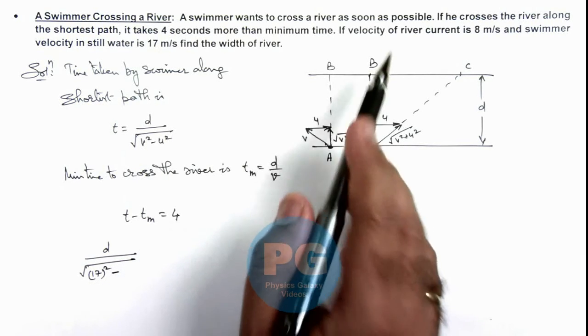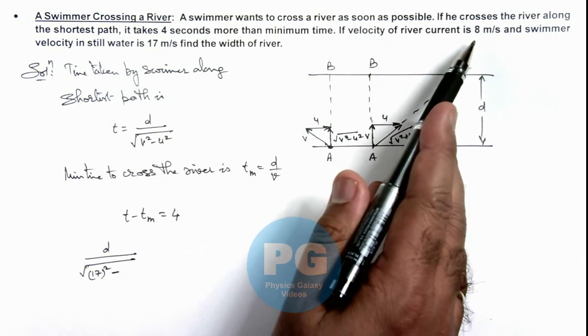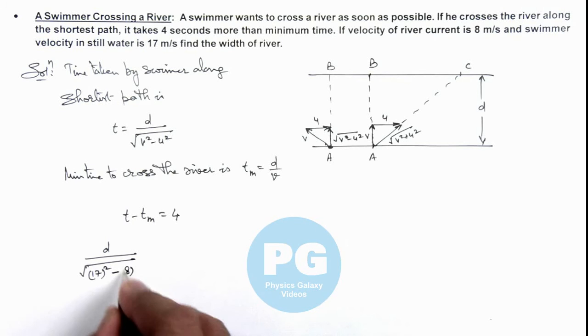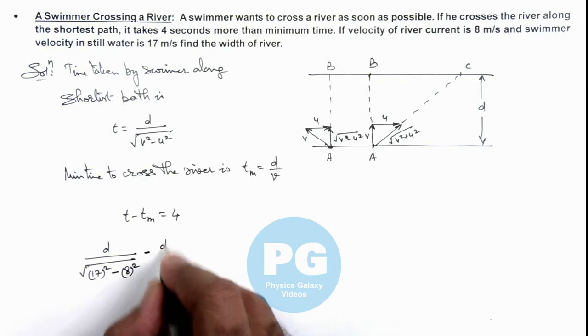Minus velocity of river current is 8 meters per second, so this is 8 square, minus this is d by 17 is equal to 4.